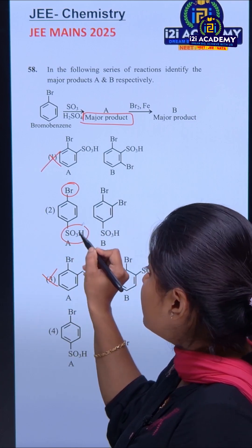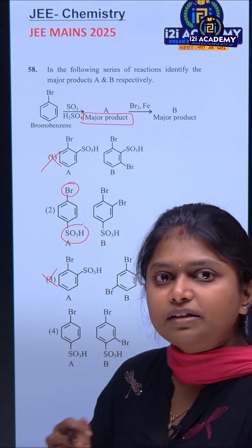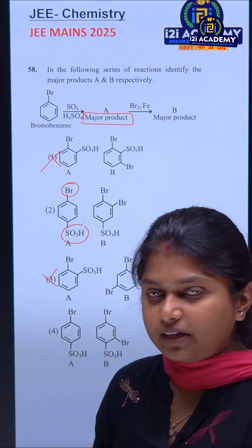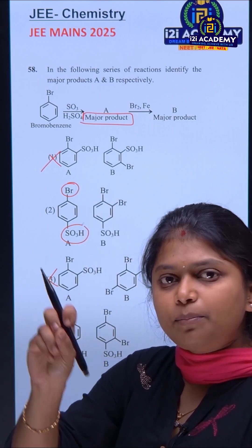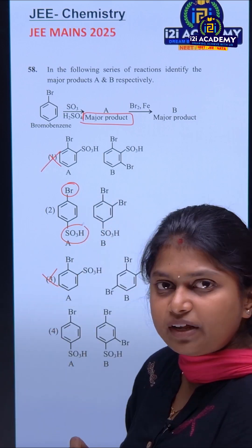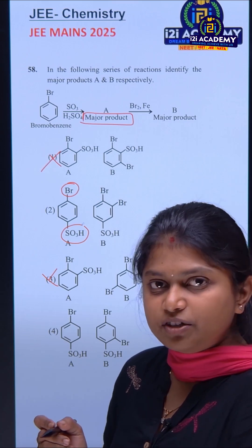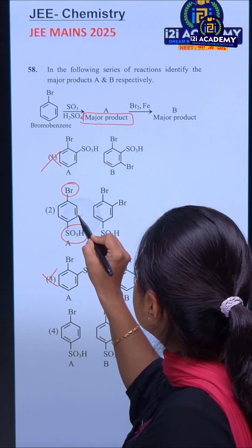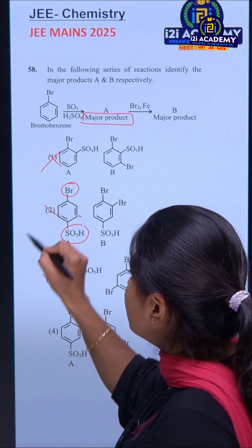In this molecule, SO3H directs the incoming group to the ortho and para positions. However, the para position is already blocked. So the para product cannot be obtained. Only the ortho substituted product will be formed. Therefore, the bromine substitution occurs at the ortho position — this option is the answer.